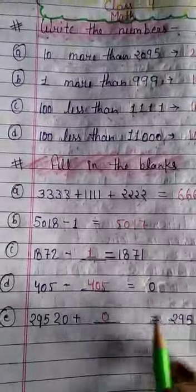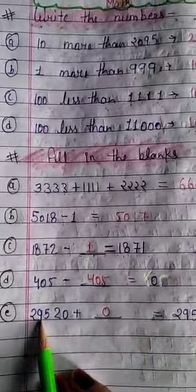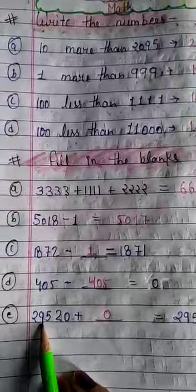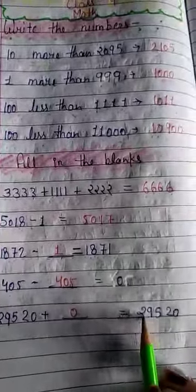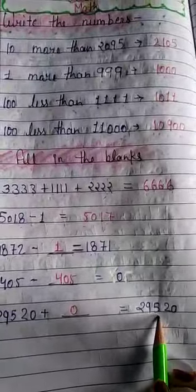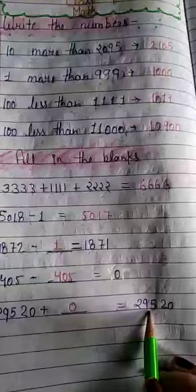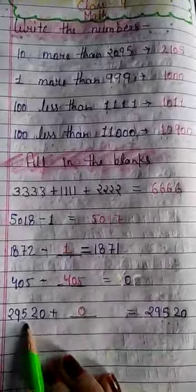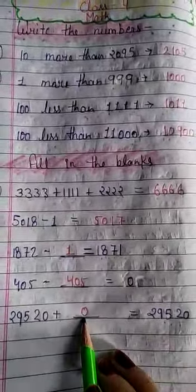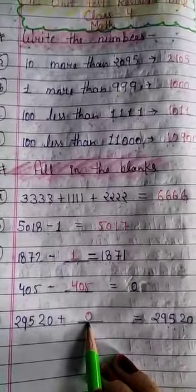ठीक है। इधर यह देखेंगे, last one. 29,520 plus dash equal to 29,520. अब हमें कितना plus करना पड़ेगा? Exactly same answer आ रहा है ना हमारा, दोनों देखें। तो हमें कितना plus करना पड़ेगा? 0 plus करना पड़ेगा। Okay students.